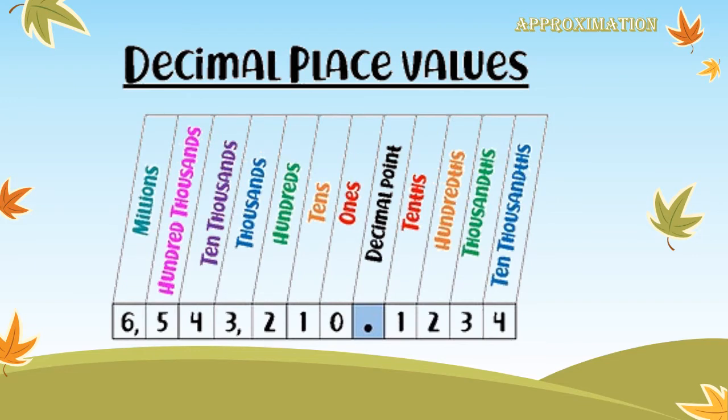We took before how to approximate to the nearest hundred thousand, ten thousand, thousand, hundred, tens, ones, and the tenth. Today we will take two new places, which are hundredths and thousandths. Like we did in ones, tens, hundreds, thousands, we will do the same in hundredths and thousandths. We will sing our song and answer them.